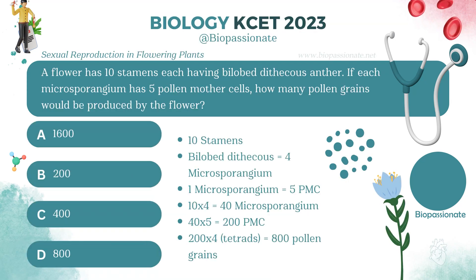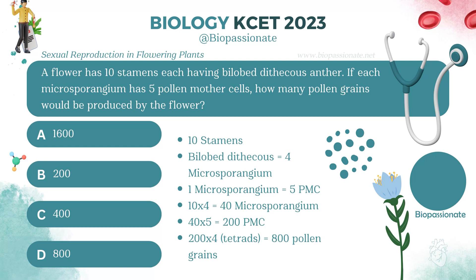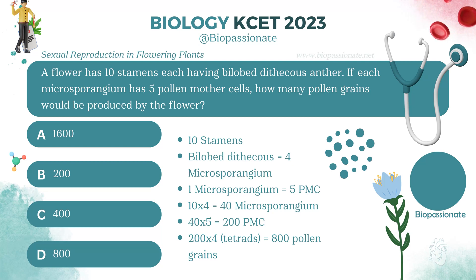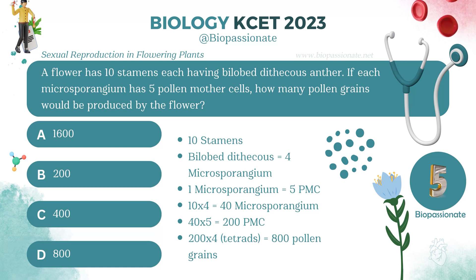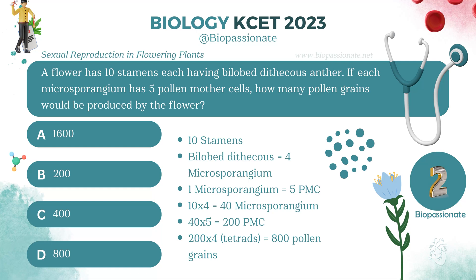A flower has 10 stamens, each having bilobal dithecous anther. If each microsporangium has five pollen mother cells, how many pollen grains would be produced by the flower? Answer: 800.